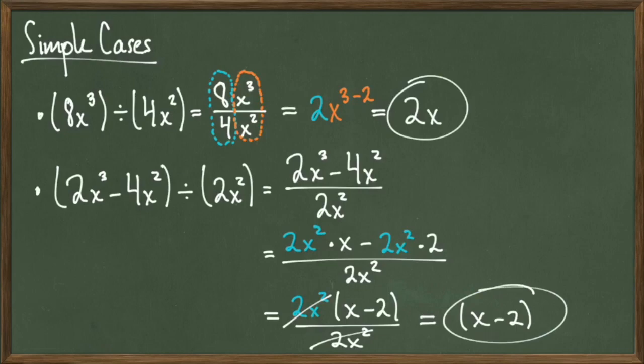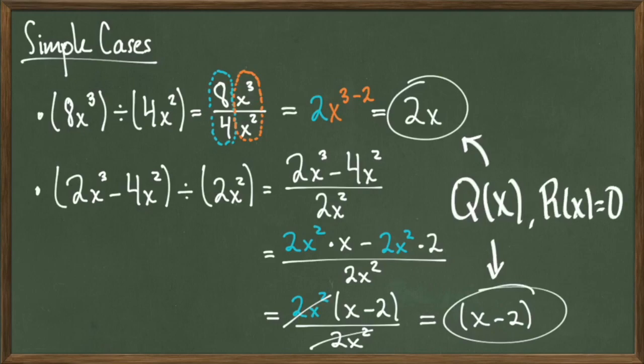The two answers that we found are actually our quotient terms. Here, it looks like 4x squared divided into 8x cubed evenly, and 2x squared divided into 2x cubed minus 4x squared evenly as well. What it means is that each of these polynomials and their divisors give their individual quotients and a remainder of zero.